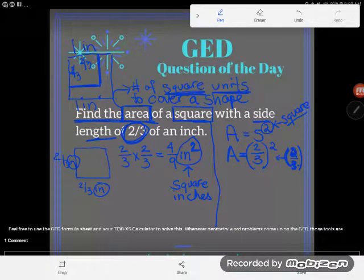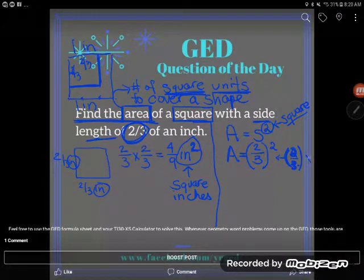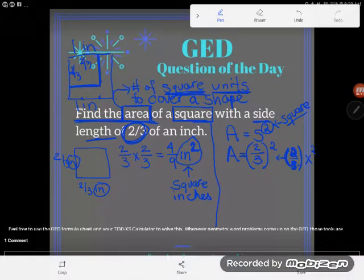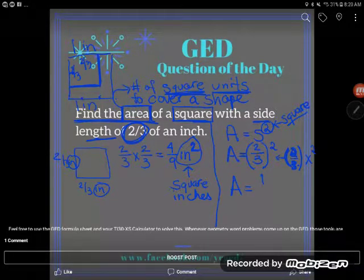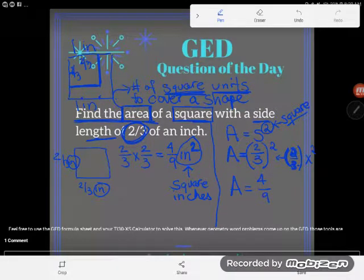And then you might be wondering, well, how do I square this? There's a button. It's the X squared button. You just type that, and it'll square it, and press enter. And you should get that the area is equal to four-ninths, which is what we were expecting.